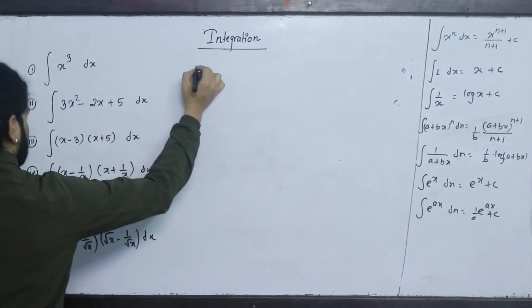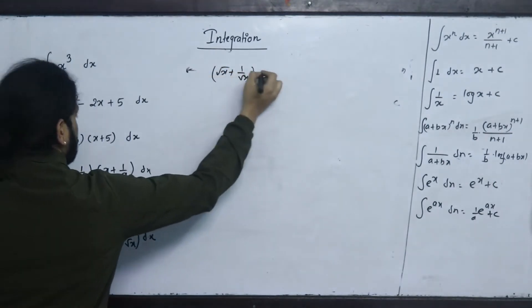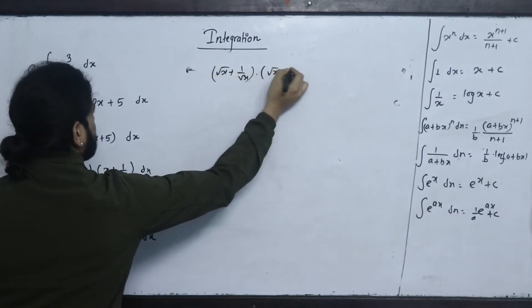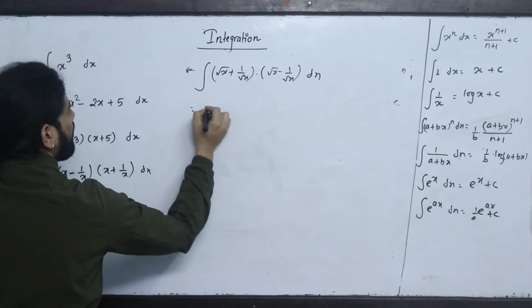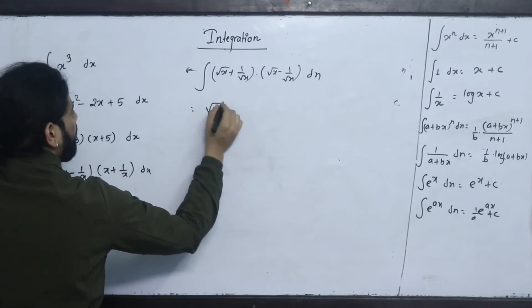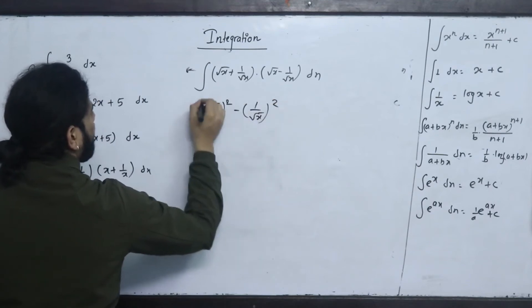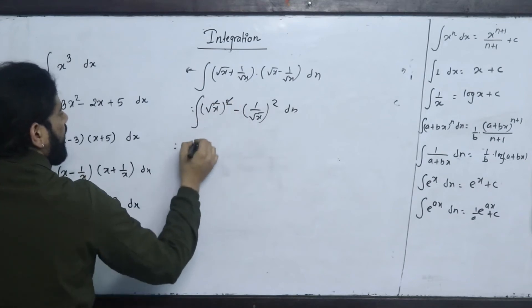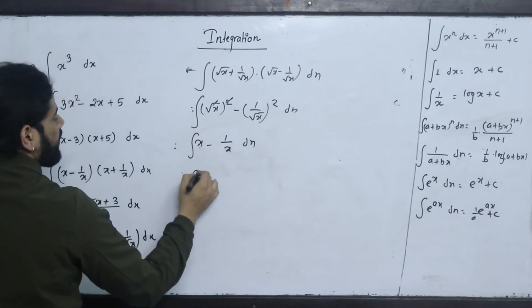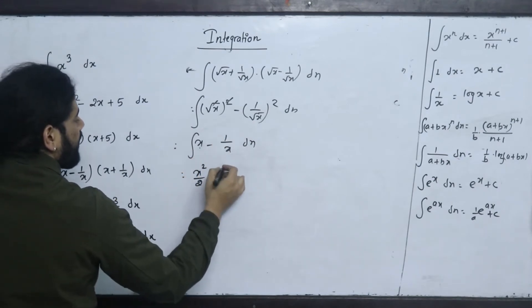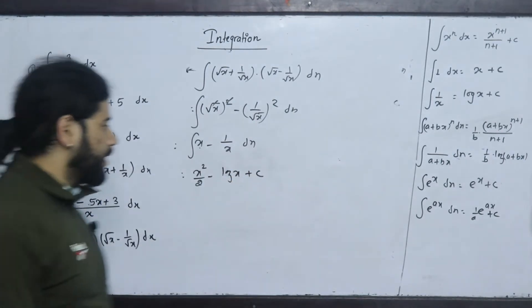Sixth question: ∫(√x + 1/√x)(√x − 1/√x)dx. Using (a+b)(a−b) = a²−b²: (√x)² − (1/√x)² = x − 1/x. Integrating: x²/2 − log x + c.